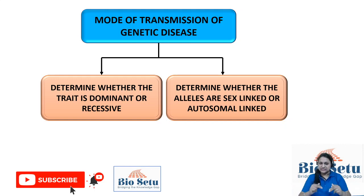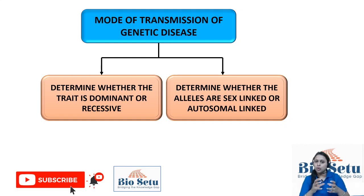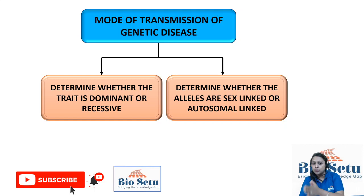The path to the progeny or to the other generation is known in two ways. First is the mode of transmission — specifically, which gene is responsible for causing the particular disorder, and second, which chromosome is carrying that gene.